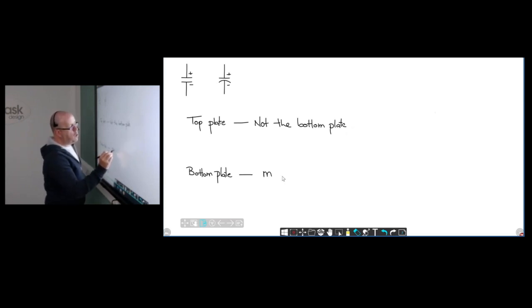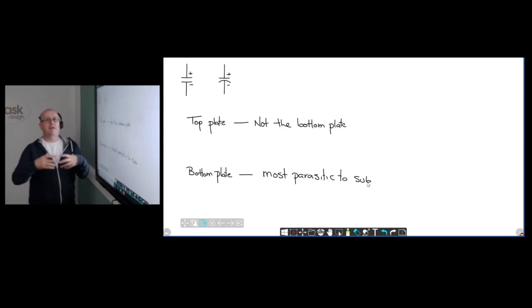So bottom plate is the one with the most parasitic to sub. So we identify the plate that has the most parasitic. That's the bottom plate. And the other one is going to be the top plate.